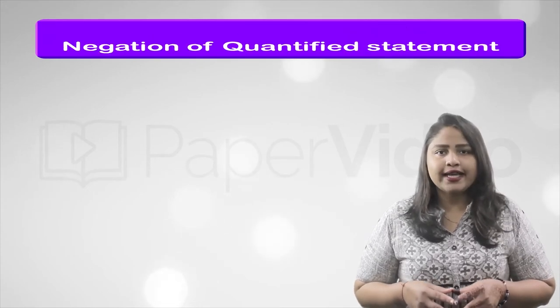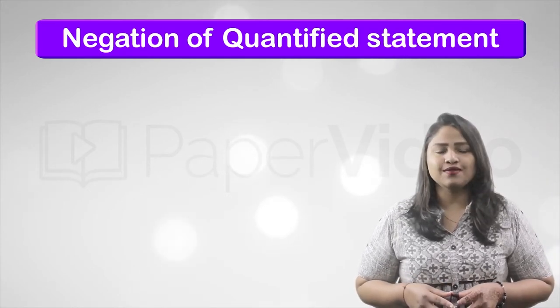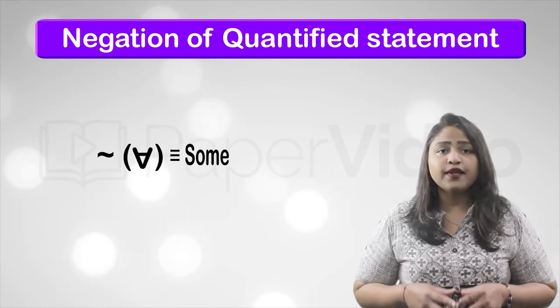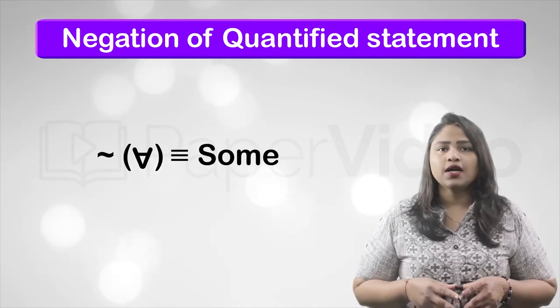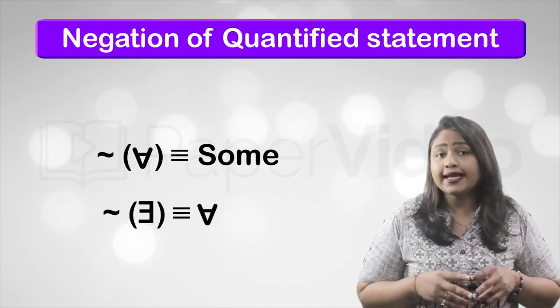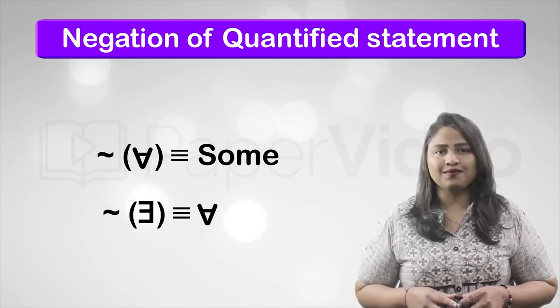Next is negation of quantified statement. The negation of the statement 'all' is 'some.' The negation of the statement 'there exists' is 'for all.'